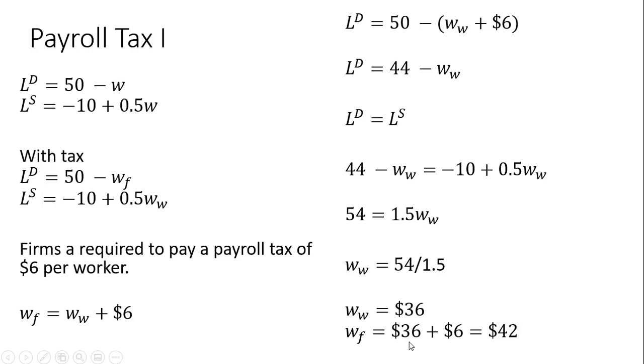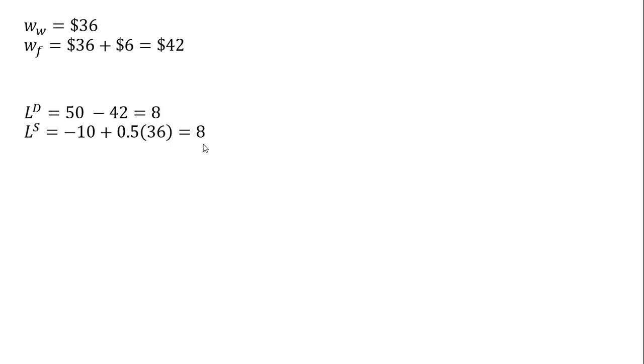For the firm, the firm will pay workers $36, but then has to pay the government $6 for each worker hired. So on an after-tax basis, the firm is now paying $42 for labor. Let's get the equilibrium level of employment. We can evaluate the labor demand equation at $42 and we see the firm is willing to hire eight workers. We can evaluate the labor supply equation at the wages of workers of $36, and workers will supply eight units of labor.